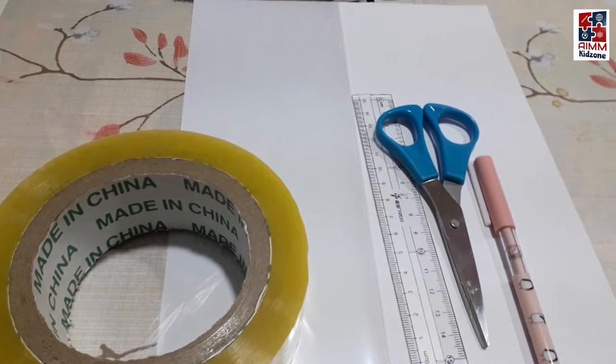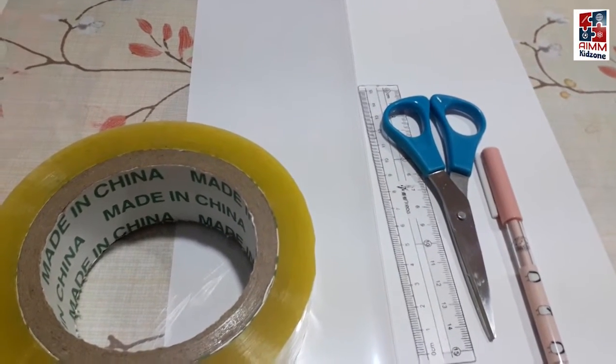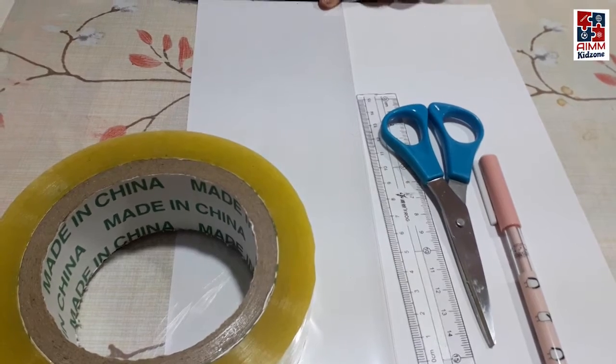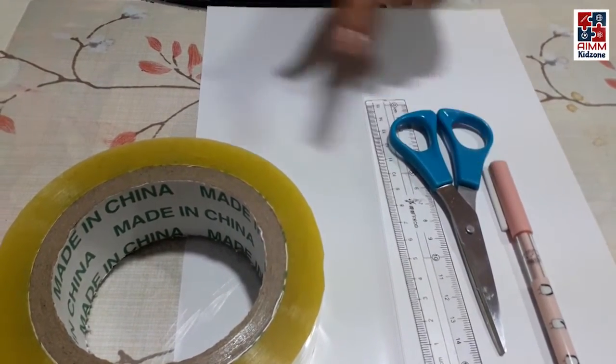Assalamualaikum. Today I am going to tell you how to make a hologram. Things that you need to make a hologram are a clear sheet, paper, scissors, scale, pen, and tape.